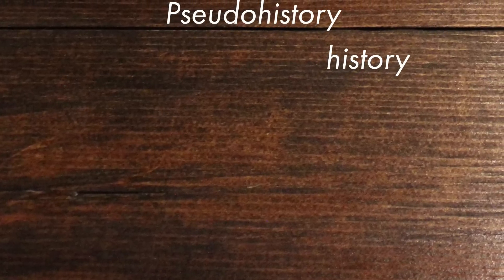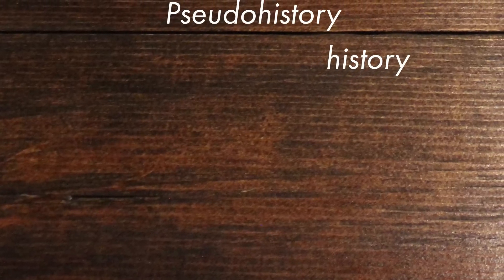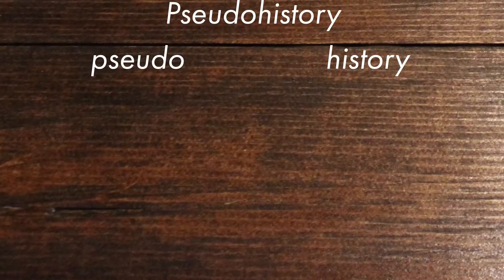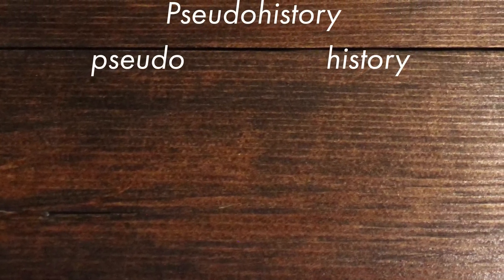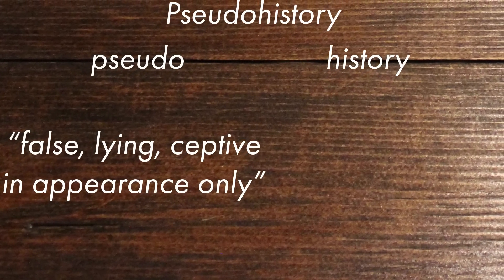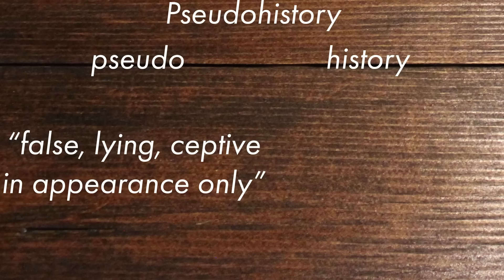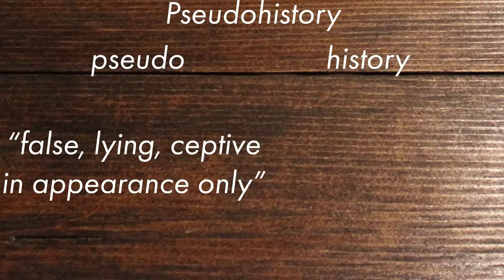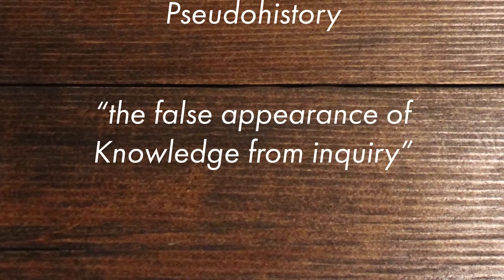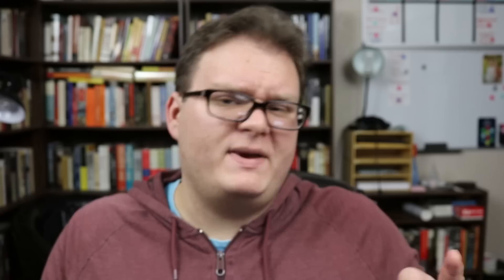We've covered the term history in a previous installment, so we'll just take that definition. But the other part of the word, pseudo, is a Greek word meaning false, lying, deceptive, or in appearance only. So when we combine these terms together, we get the false appearance of knowledge from inquiry. Basically, pseudohistory tries to look like history, but it isn't.